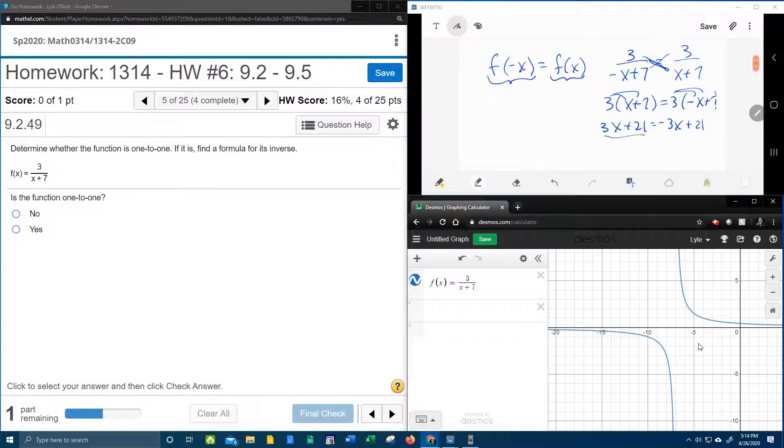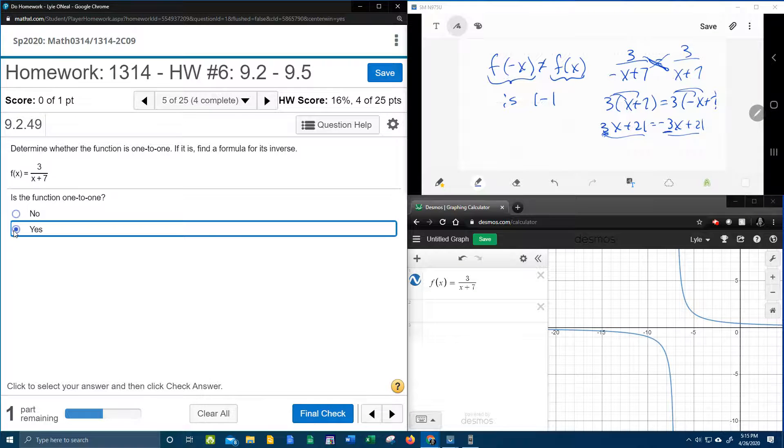Do you notice at this point, it's pretty easy to see that these are not the same, because the coefficients of x are not the same. So if f of negative x is not equal to f of x, then the function is one-to-one. If they are equal, then it's not one-to-one. So this is definitely one-to-one.